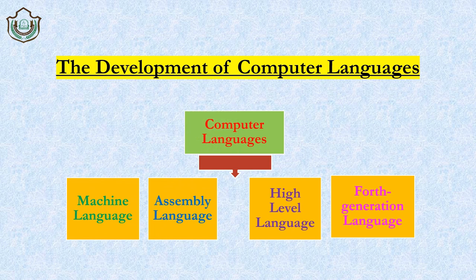We are dividing computer languages into four types: the first is machine language, the second is assembly language, the third is high level language, and the fourth is fourth generation language. These are the four types of computer languages we are going to read about in this chapter.